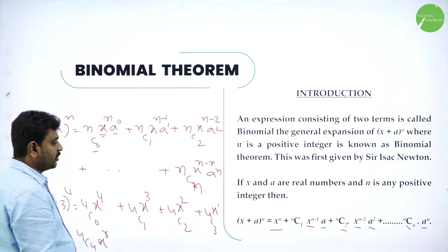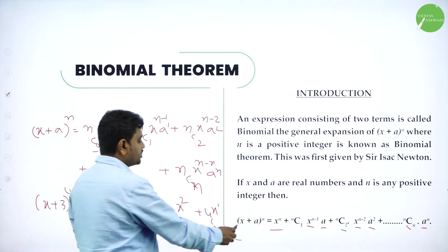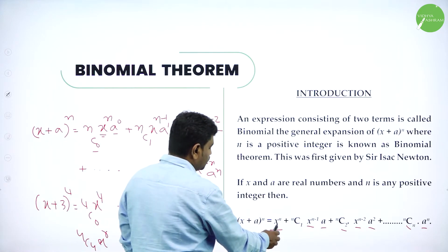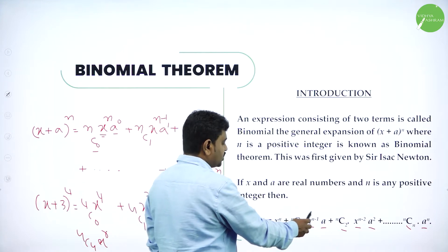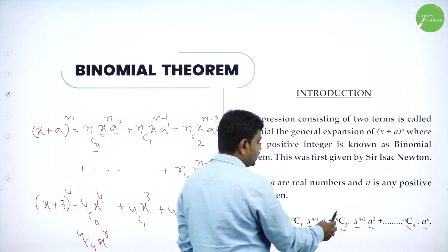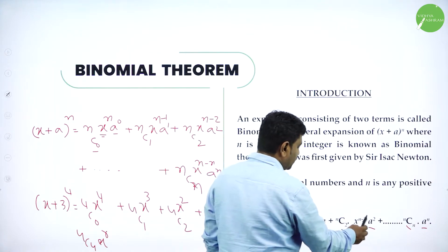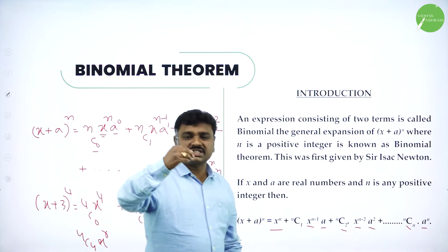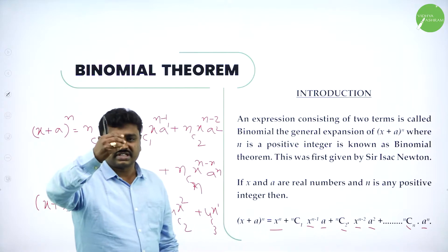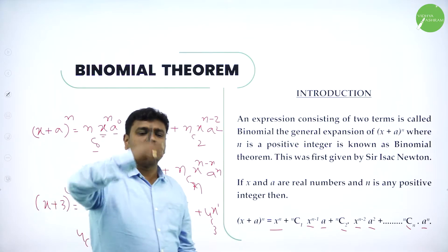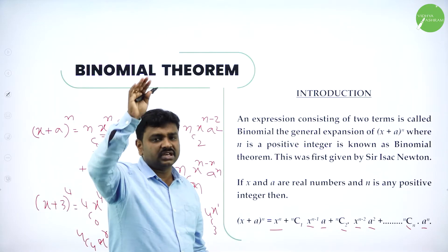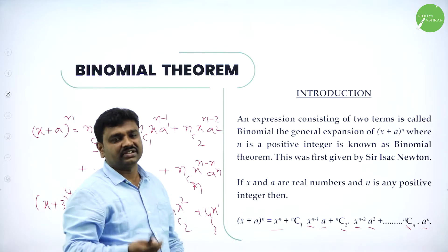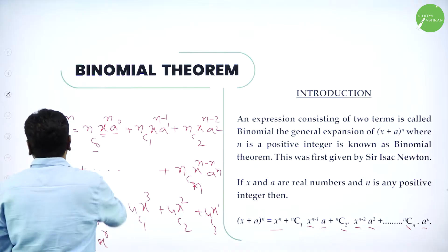So the general form of x plus a power n expansion is: x power n, plus nC1 x power n minus 1 times a, plus nC2 x power n minus 2 times a square, and so on. x power decreases, a power increases, from nC0 to nCn — this is the formula.